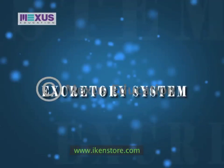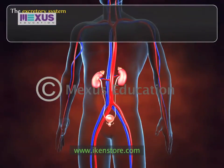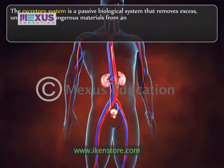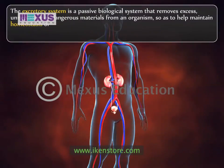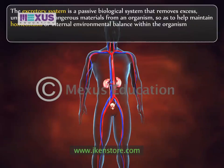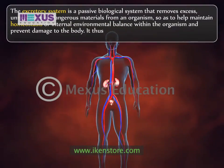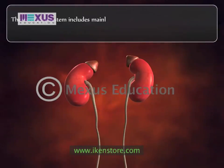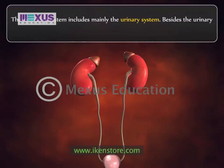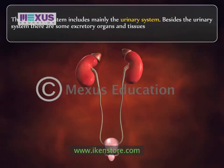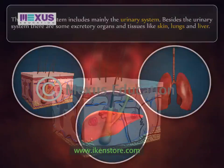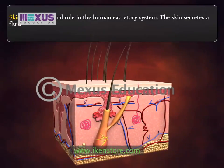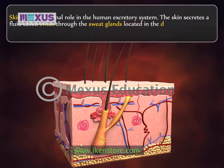The excretory system is a passive biological system that removes excess, unnecessary, or dangerous materials from an organism, so as to help maintain homeostasis or internal environmental balance within the organism and prevent damage to the body. It forms an important feature of human anatomy. The excretory system includes mainly the urinary system. Besides the urinary system, there are excretory organs and tissues like skin, lungs, and liver. Skin plays a minimal role in the human excretory system.